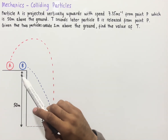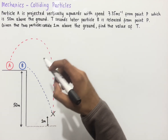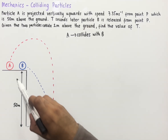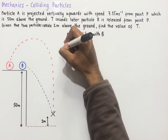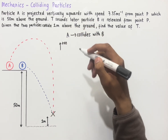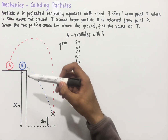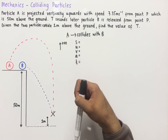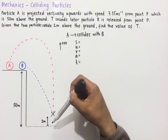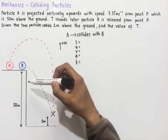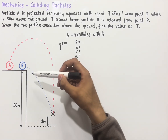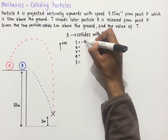We have a diagram which models the situation. We'll start by considering the motion of particle A from when it is released to when it collides with particle B. Since particle A is projected upwards, we'll make the upwards direction positive. Now considering the SUVAT for particle A: the displacement is from where the particle starts to where it ends up when it collides with B. Particle A is 50 meters above the ground when released and one meter above the ground when it collides with B, so it has traveled 49 meters downwards, giving a displacement of minus 49 meters.